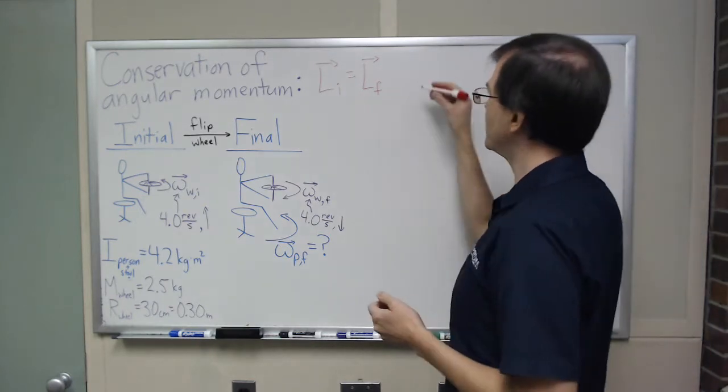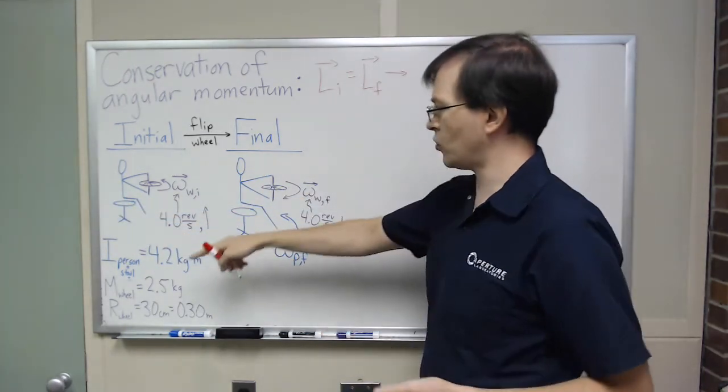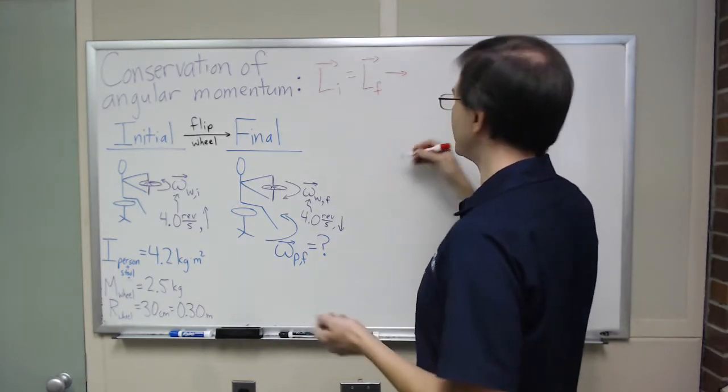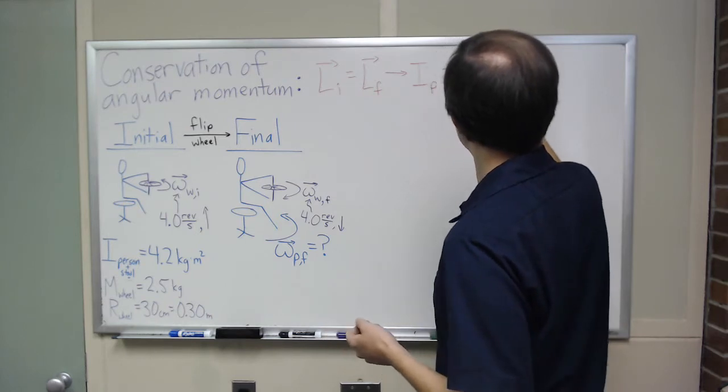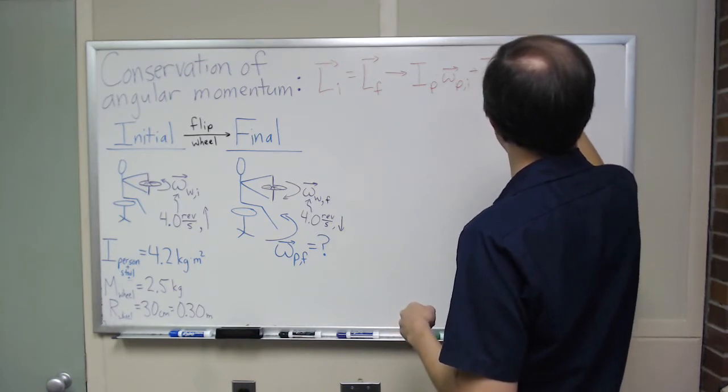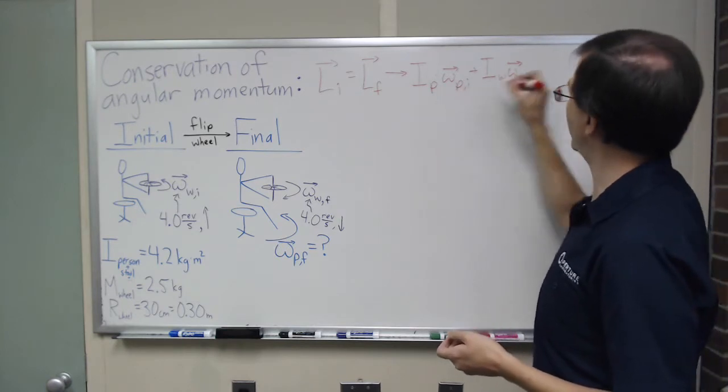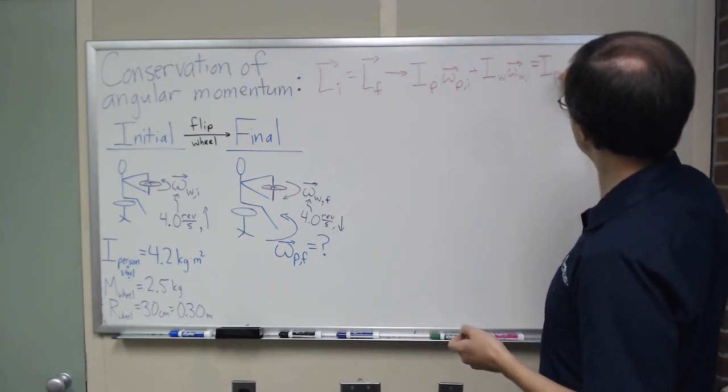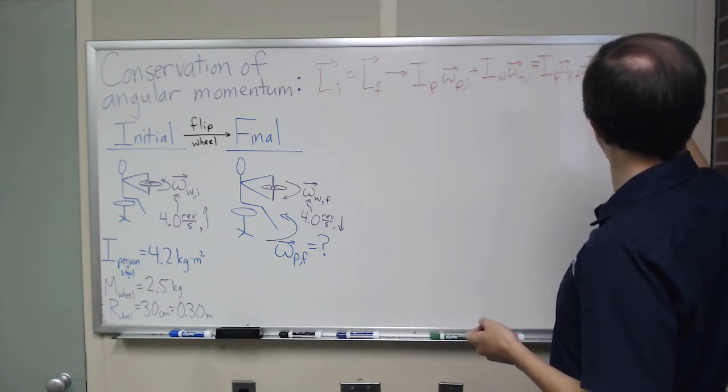And so, to be a bit more explicit about this, my initial angular momentum is the angular momentum of the person, which is a person and stool. Well, I'll just say person to mean the person and the stool and the other things that count as that, as opposed to the rotation of the wheel around its own center of mass. This is going to be angular momentum of the person. So I person times omega person initial plus angular momentum initial of the wheel. I wheel times omega wheel initial. That curly w thing is the Greek letter omega, lowercase omega. So I've got that. That's initial. And that's going to have to equal my final angular momentum.